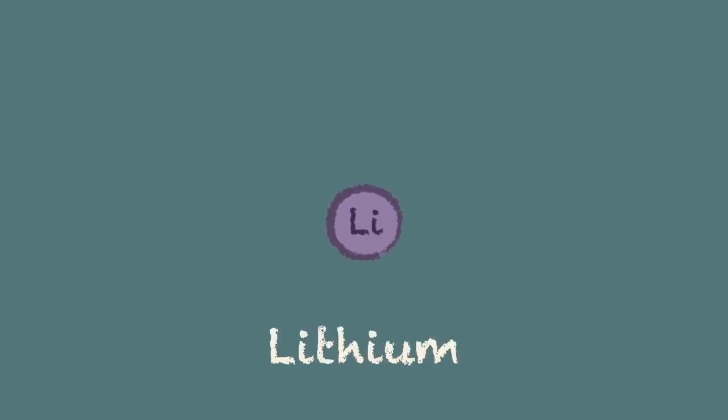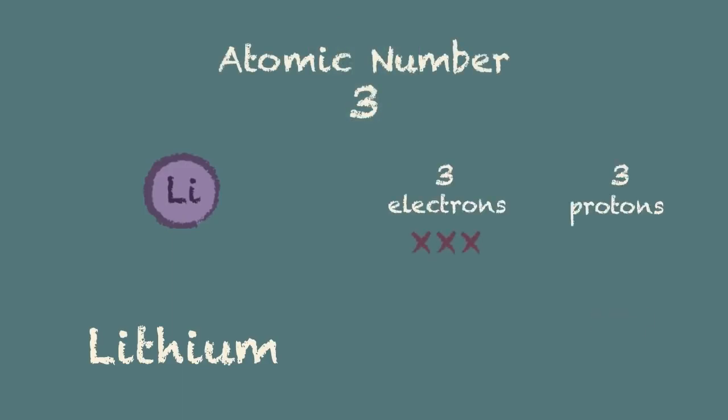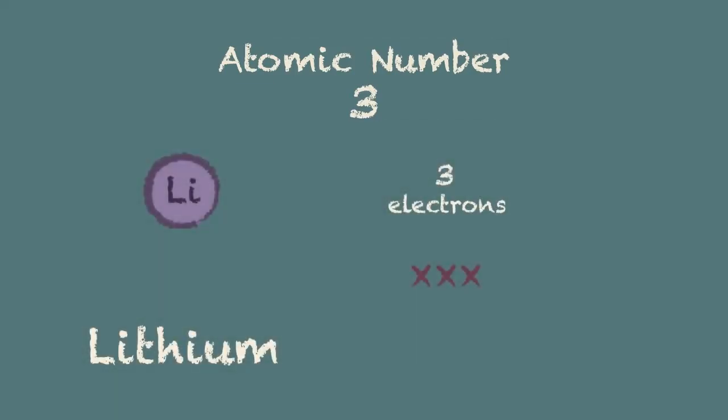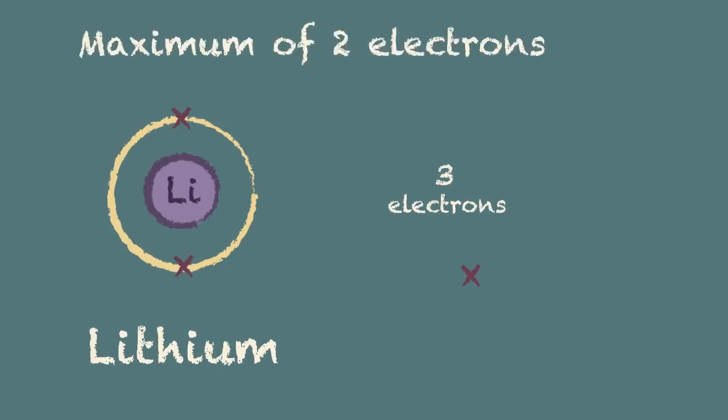We'll take a lithium atom as an example. With an atomic number of 3 it must have 3 electrons to balance the positive charge of the 3 protons in the nucleus. It's worth remembering that the atomic number tells you the total number of electrons in a neutral atom. So we put the first electron into the first shell and the second. However, this shell can only contain a maximum of 2 electrons. That's one of the rules that you need to remember.